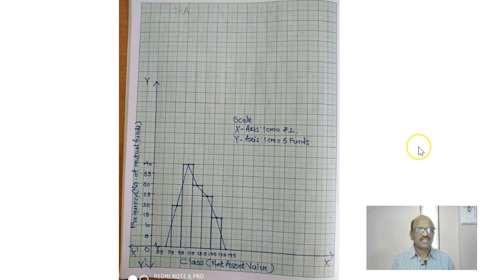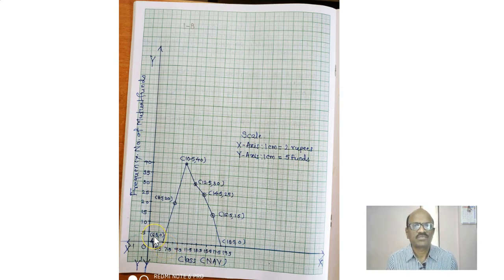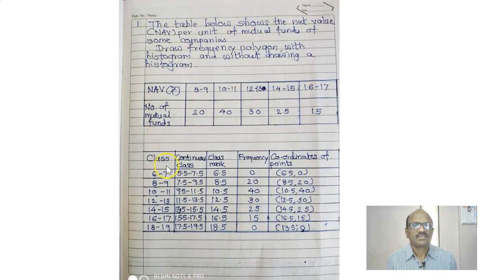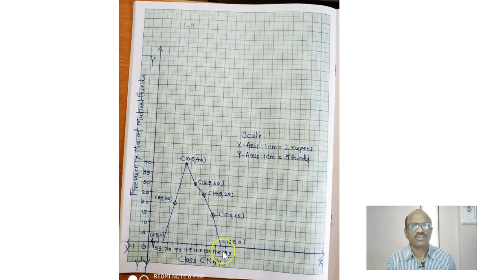Now we will learn how to draw the frequency polygon without the help of the histogram. We require the points — the first is (6.5, 0). The points are: 6.5, 0; 8.5, 20; 10.5, 40; 12.5, 30; and so on. To draw, plot these points: first is 0, second, third, fourth, fifth, sixth, and the last frequency will be 0. The same scale applies: on the x-axis 1 cm equals 2 rupees, and on the y-axis 1 cm equals 5.